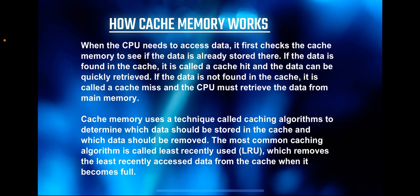When the processor needs data, it checks the cache memory first. If the data is found, it is called a cache hit and the processor can access it quickly. However, if the data is not found in the cache, it is called a cache miss. In case of a cache miss, the processor has to fetch the data from main memory and bring it into the cache, which takes more time and momentarily slows system performance. Once the data is in the cache, subsequent access to the same data becomes faster, resulting in cache hits.